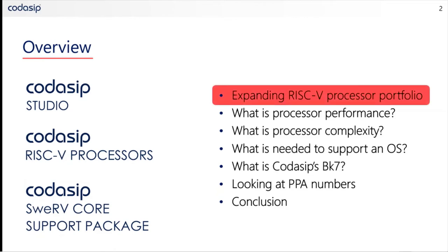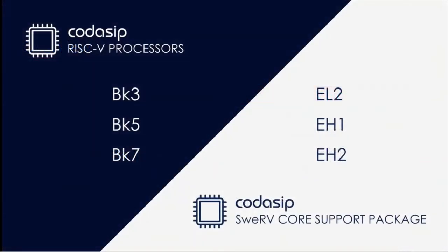Today we're talking about an overview of the expanded RISC-V processor portfolio from Codisip. If you'd asked us what was available just over three months ago, we would have said we could offer you the BK3 and BK5 embedded RISC-V cores, aimed at the low and medium ends of the embedded market. Today we have an offering of six different cores.